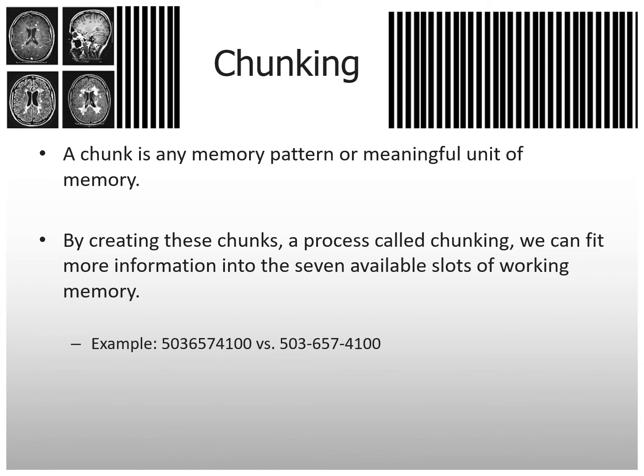Think about a phone number — that's 10 digits, more than our working memory allows. But if you chunk it, you say it in three chunks: area code, then three digits, then four digits. For example, 503-657-4100. You chunk it, and it makes it easy.